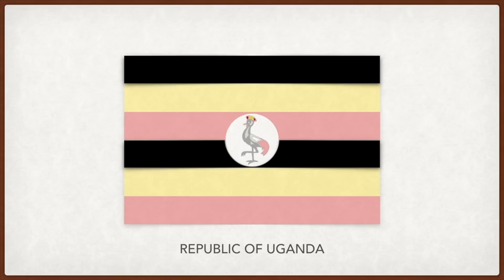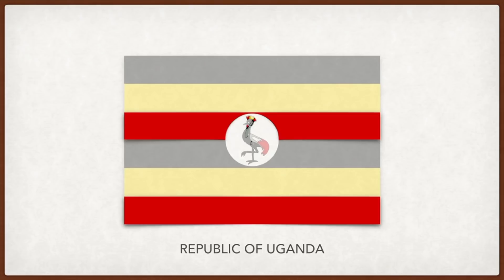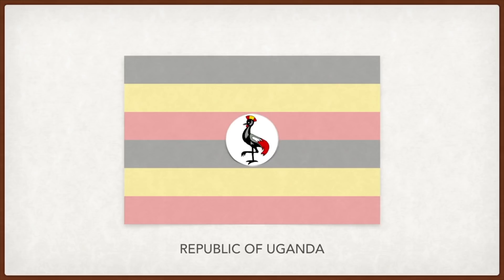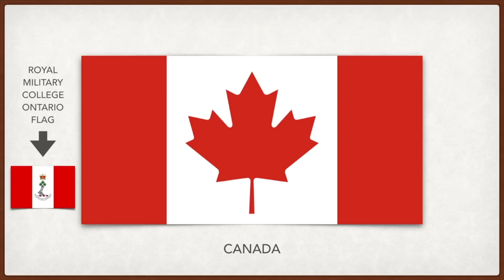Canada: the maple leaf is a symbol of national unity distinct from the British; the red, white, and red pattern was inspired by the Royal Military College in Ontario. Morocco: the red represents the royal family being descendants from Muhammad the Prophet through his daughter Fatima, and represents bravery and strength, while green represents love, joy, hope, and Islam.